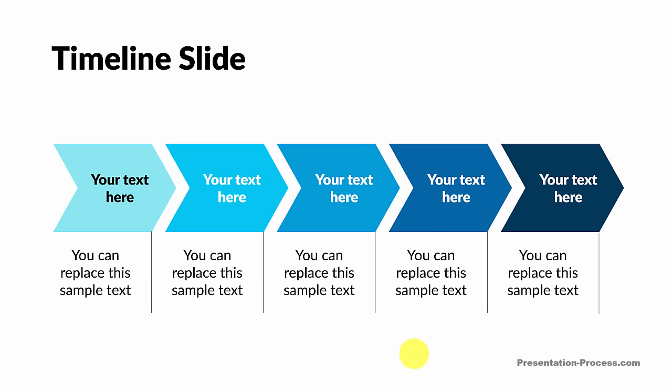The next trick is how to convert your cursor into a laser pointer. Do you know that by holding the control button down and clicking on your cursor, you can change your cursor into a laser pointer? It's a neat little trick you can try in your next business presentation.